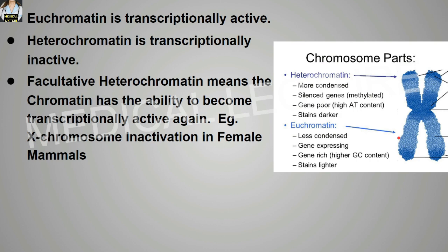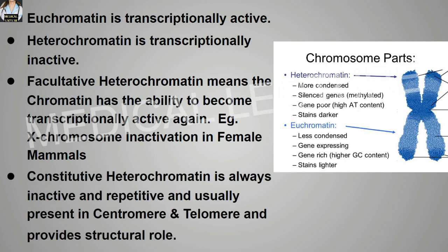Facultative heterochromatin means the chromatin has the ability to become transcriptionally active again — for example, X chromosome inactivation in female mammals, also known as Barr body formation. Constitutive heterochromatin is always inactive, repetitive, usually present in the centromere and telomere, and provides a structural role. That covers today's important notes; we will discuss further in the next video. Thank you.